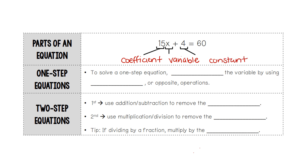To solve a one-step equation, we want to isolate the variable by using the inverse or opposite operations. We're going to be working with opposites. It's important to remember that positive and negatives are opposites, so plus and minus. Multiplying and dividing are also considered opposites.